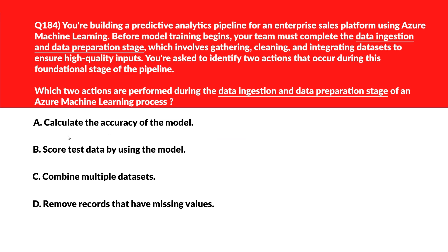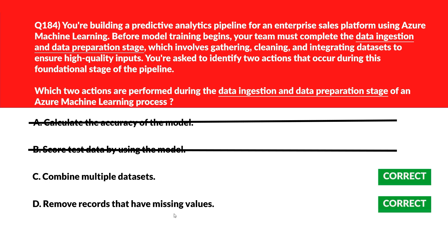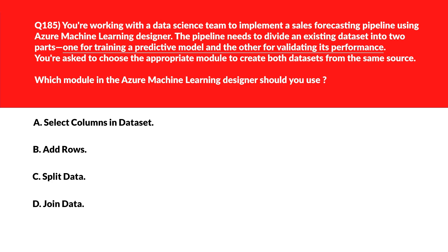Now let's look at this question — we need to select two correct answers. Option A says calculate the accuracy of the model — accuracy evaluation happens after model training, not during data preparation, so it's incorrect. Option B says score test data using the model — scoring is part of model testing, not data ingestion, so it's wrong. Option C says combine multiple datasets — combining datasets is a standard step in data preparation, so let's keep it. Option D says remove records that have missing values — removing incomplete records ensures data quality before modeling. Options C and D are the right answers.